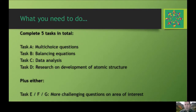In total you're going to have to do five tasks. Four of them — tasks A, B, C, and D — are compulsory and you must do those. Then you can choose either E, F, or G as your fifth task, picking according to your interest. Whichever one you pick, you'll find they're much more challenging than the first four.